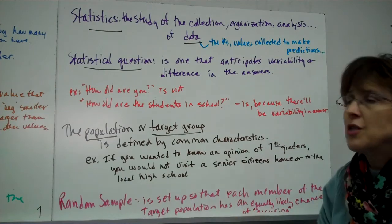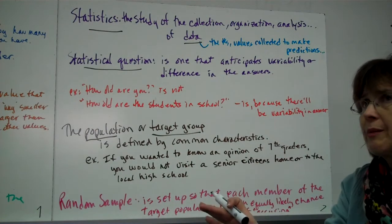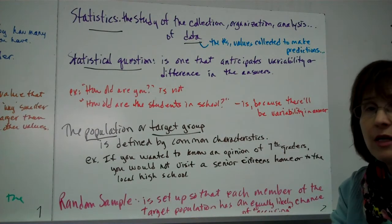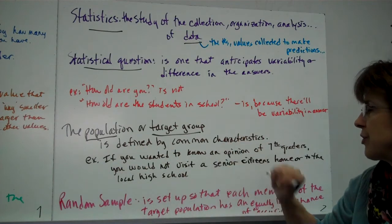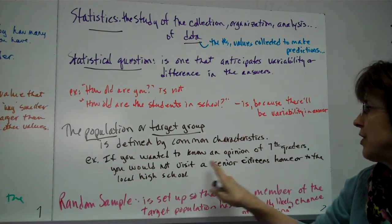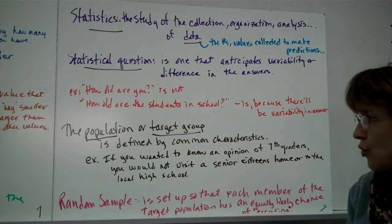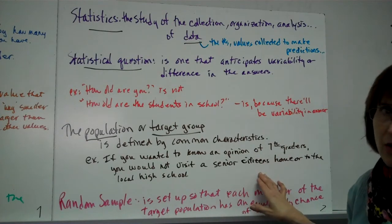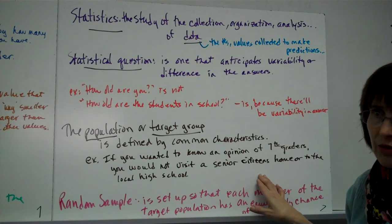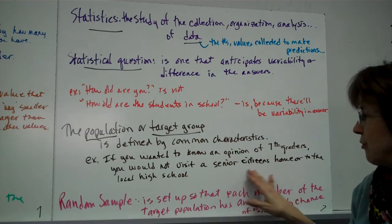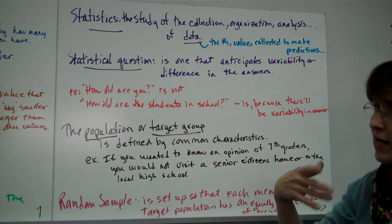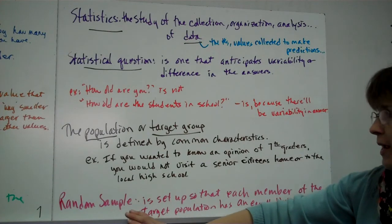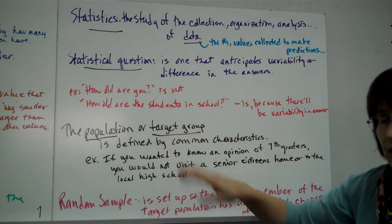The population, or sometimes it's called the target group, or sometimes it's like the population, you're going to be saying, what's the population you're going to study for this particular question? Okay, it's defined by common characteristics. For example, if you wanted to know an opinion of 7th graders, you wouldn't go visit a senior citizen's home to find out how 7th graders, what their favorite pop star is or what their favorite movie is. You wouldn't go to a local high school. You'd go to the local middle school. You'd ask your classmates. That's called population or target group.